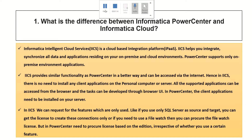In Power Center, the client applications need to be installed on your server. In IACS, we can request features based on our usage — for example, if you use only SQL Server as your source and target, you can get a license to create those connections only, not for all. Or if you need a file watcher job, you can procure only the file watcher license. Based on your requirement, you procure the license for particular features. But in Power Center, you need to procure the license based on the edition, irrespective of whether you use a certain feature or not.